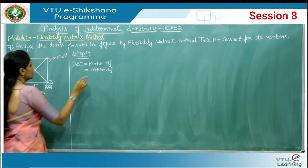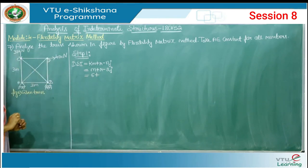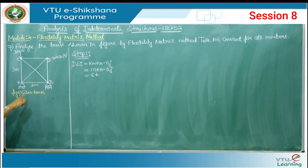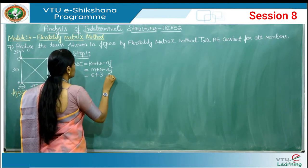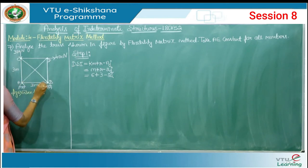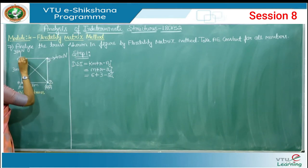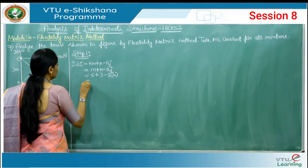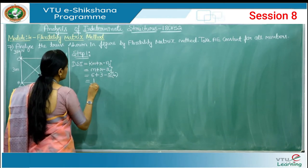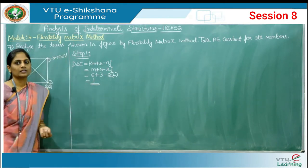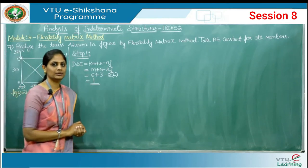Count the number of members: we have 1, 2, 3, 4, 5, and 6 — six members. The number of reactions: support A is hinged giving two reactions, and support B is a roller giving one reaction, so total reactions r equals 3. The number of joints is 4. So the equation gives 6 plus 3 minus 2 times 4, which is 9 minus 8 equals 1.